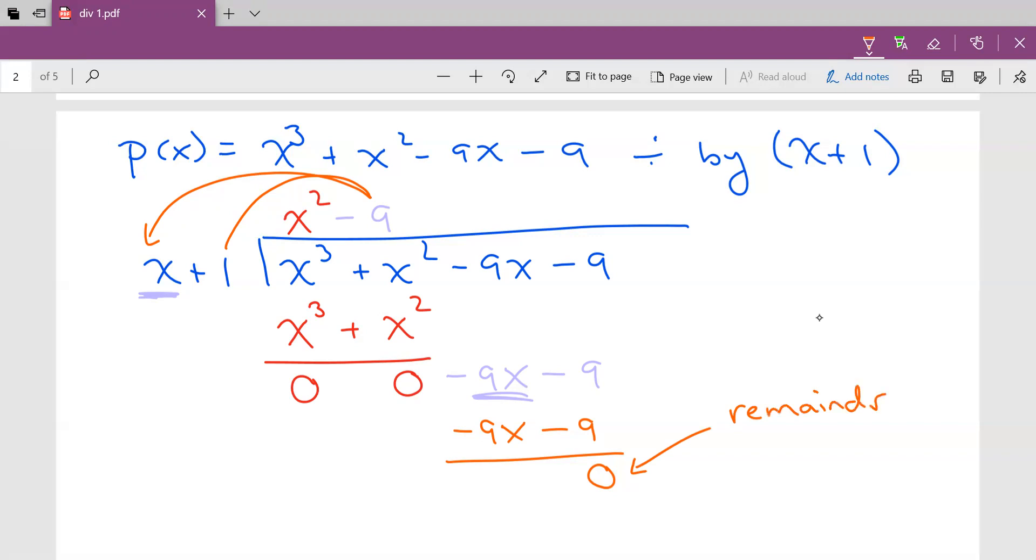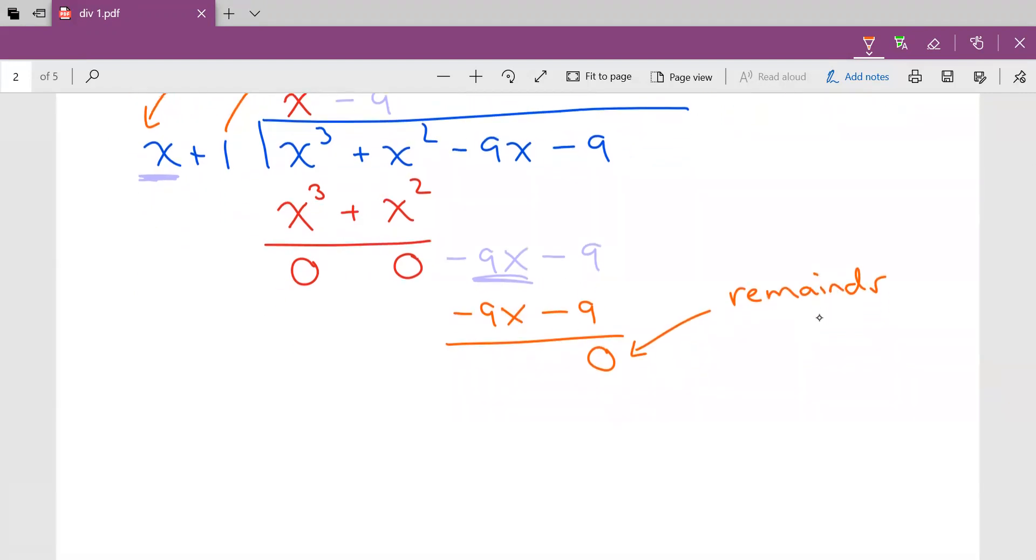Well, in this case, if our remainder is 0, here's what we just figured out. Our remainder is 0. So therefore, x + 1 is a factor of our polynomial p(x). And if it's a factor of p(x), then guess what? Therefore, x = -1 is a zero of p(x).